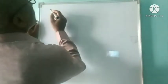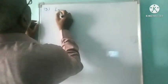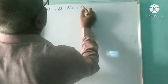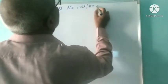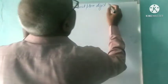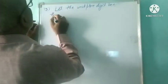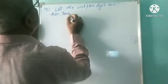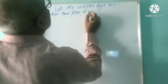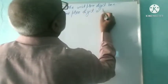Question number 3. The sum of the digits of a two-digit number is 9. When we interchange the digits, it is found that the resulting new number is greater than the original number by 27. What is the two-digit number? First of all, let the unit place digit be x. Then the tens place digit is equal to 9 minus x.